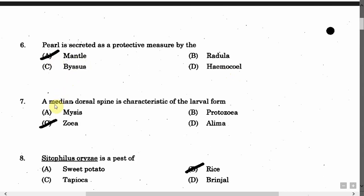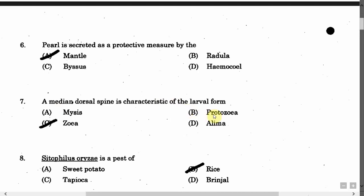The next question is: Median dorsal spine is characteristic of which larval form? Option A: Nauplius. Option B: Protozoa. Option C: Zoea. Option D: Elema. The correct answer is Option C, that is Zoea.